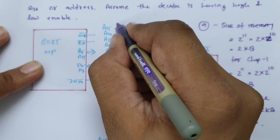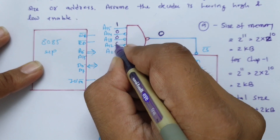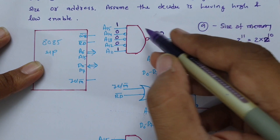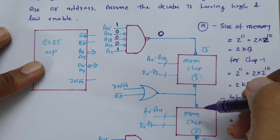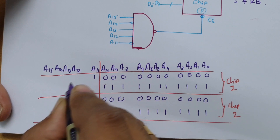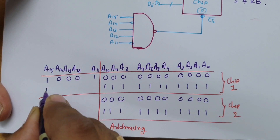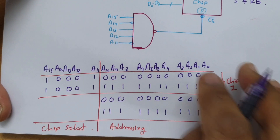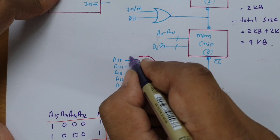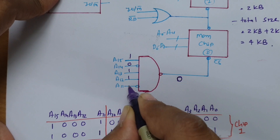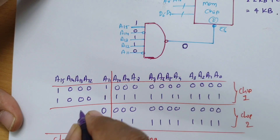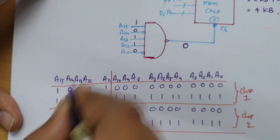For chip 1 selection: since this is a NAND gate, to get output 0, the inputs must all be 1. So A11 should be 1, A12 and A13 and A14 should be 0, and A15 should be 1 — then the NAND gate output becomes 0 and chip 1 gets selected. To select chip 2, the NAND gate output should be 0, so A11 should be 0, A12 and A13 should be 1, A14 should be 0, and A15 should be 1.